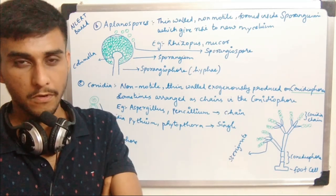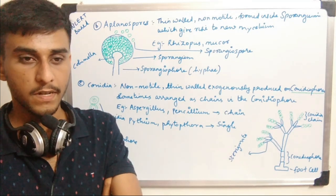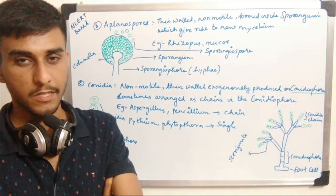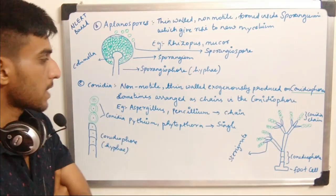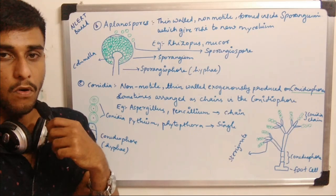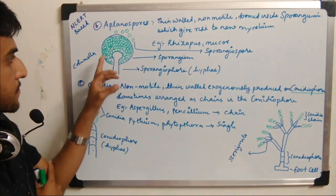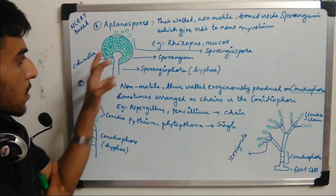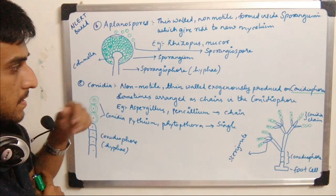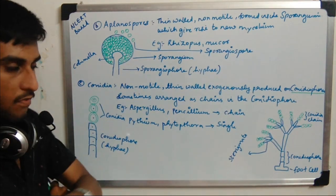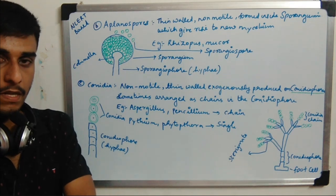The aplanospores are produced in a specialized structure called the sporangium. The sporangium is a modification of the hyphae. Looking at the sporangium of the aplanospore, the sporangium is held in a specialized stand-like structure known as the sporangiophore — specialized hyphae used to hold the entire reproductive part.